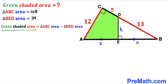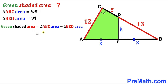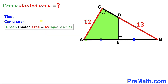Now for our final step: the area of the green shaded region equals the area of triangle ABC minus the area of triangle BED, which is 108 minus 39, giving us 69 square units. So the area of the green shaded region is 69 square units. Thanks for watching and please don't forget to subscribe to my channel for more exciting videos!